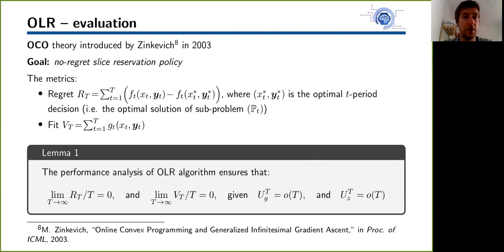The OCO theory introduced by Zinkevich in 2003 gives us two fundamental metrics, the regret and the fit. The regret is the difference between the cumulative loss of our policy and the cumulative loss of a benchmark policy. The benchmark we refer to is the optimal solution of each subproblem PT. We could find a tighter comparator like the benchmark which is the optimal solution of the total problem P, but this benchmark is already a very challenging comparator.